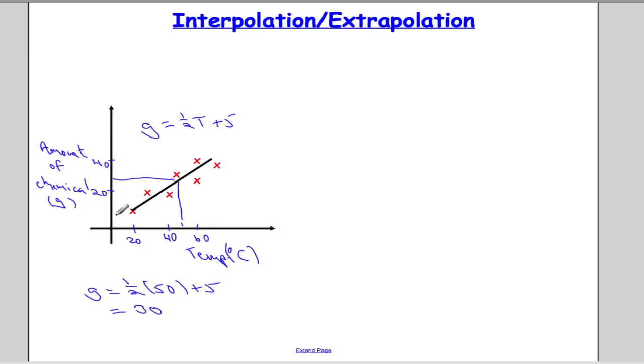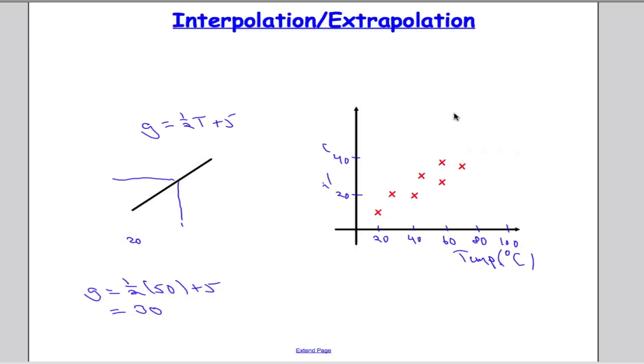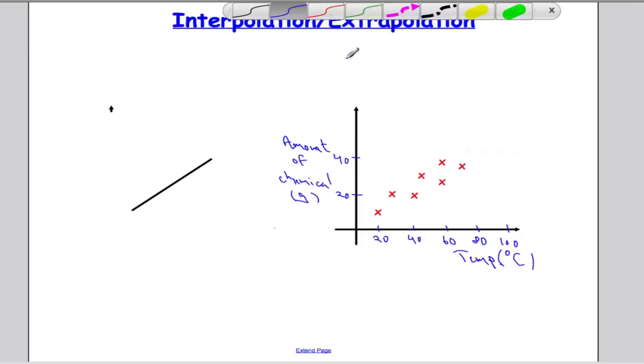That's interpolation because it's within the range of data. But suppose I was to ask the question of well how much chemical is produced at 100 degrees. And we used our regression equation. We would expect it was a half t plus 5. We would expect so at 100 degrees we would expect to get 55.